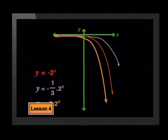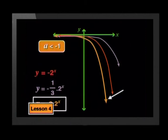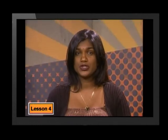We can generalize this by saying that for negative a-values, an a-value between negative 1 and 0 will cause the reflection of the parent graph to shrink vertically towards the x-axis. An a-value less than negative 1 will stretch the graph vertically away from the x-axis. We have tested this for b equal to 2, but if you test other b-values, you will find that negative a-values have the same effect on them.